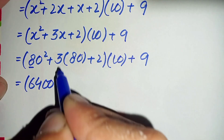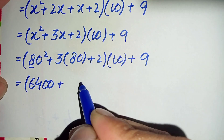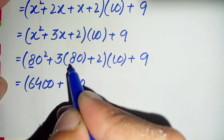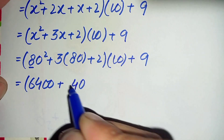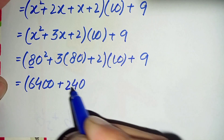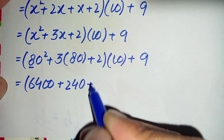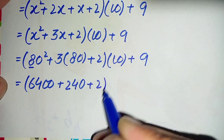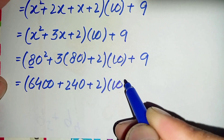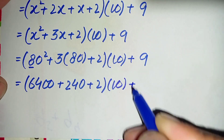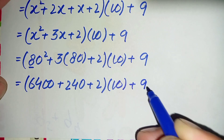Evaluating: 80 squared is 6400. 3 times 80 is 240. So 6400 plus 240 plus 2 gives 6642. Then we have 6642 times 10, plus 9.